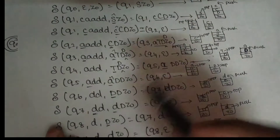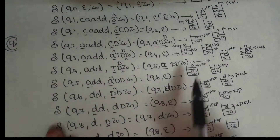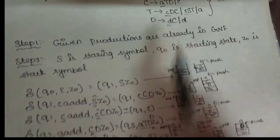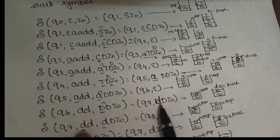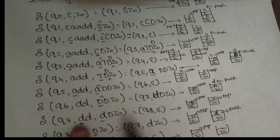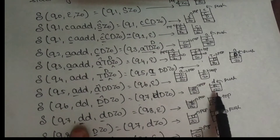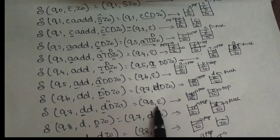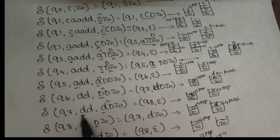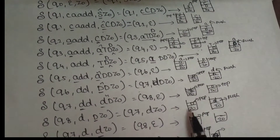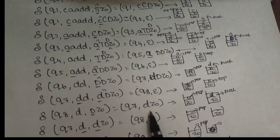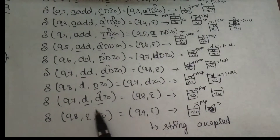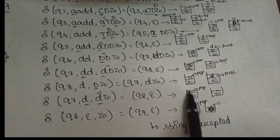The top of the stack is D — capital letter D, non-terminal. We push the production: capital D goes to small letter D. We push D, D, Z-naught. The top of the stack is now a terminal symbol. We verify the input symbol — it matches, so we pop. The stack becomes D, Z-naught. We process the next input. Remaining is D. D is a non-terminal — this will pop D, and we push D, Z-naught. The terminal is there, the input symbol matches — pop. Then there is Z-naught.